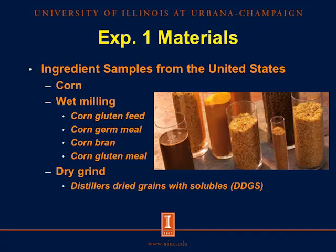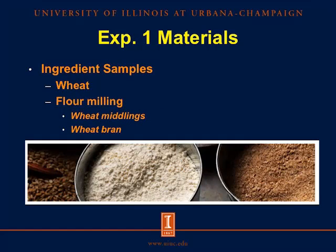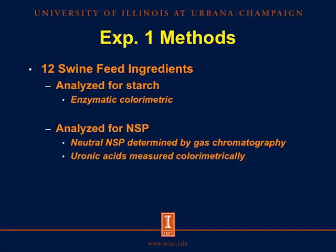The materials of Experiment 1 were 12 ingredient samples from the United States. We used corn and four corn co-products from the wet milling industry — corn gluten feed, corn germ meal, corn bran, and corn gluten meal — and one co-product from the dry grind industry, distillers dried grains with solubles, or DDGS. We also had a sorghum sample and two sorghum DDGS samples, one from Kansas and one from Texas, with the Kansas sample having greater solubles added. Then we had wheat and two wheat co-products from the flour milling industry, wheat middlings and wheat bran. These 12 ingredients were analyzed for starch using an enzymatic colorimetric procedure and for NSP using gas chromatography for neutral NSP and colorimetry for uronic acids.